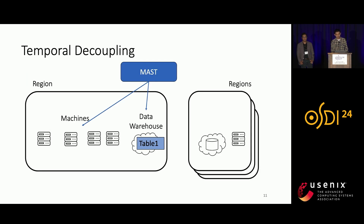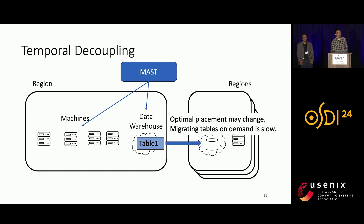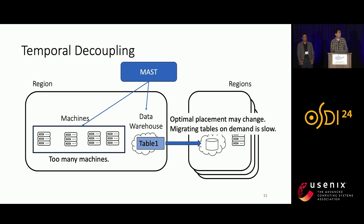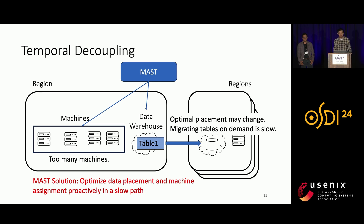Temporal Decoupling is motivated by two observations. First, the optimum region to place a table often depends on many jobs, so the optimum region may change over time as new jobs or hardware are added. If we adjust table placement on demand when scheduling a job, it would create an unacceptable delay, since migrating tables could take hours or even days. Second, if MAST has to select machines among all millions of candidates, it creates a very large and challenging problem. MAST's strategy is to optimize data placement and machine assignment proactively in a slow path, so that the fast-path real-time scheduler can almost always leverage the result of that optimization.